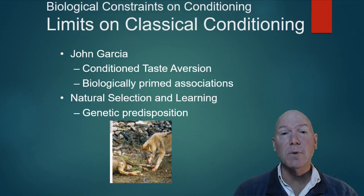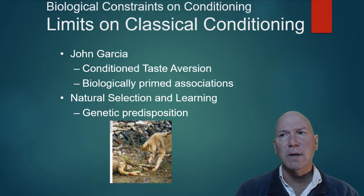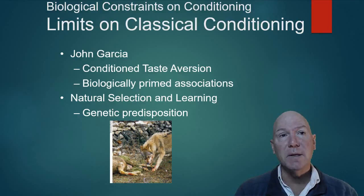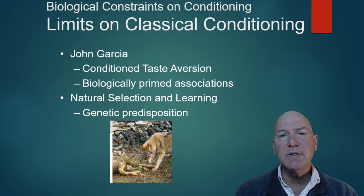A guy named John Garcia really questioned the idea that any stimulus can substitute for an unconditioned stimulus. He was doing experiments with rats, giving them small doses of radiation which made them nauseated and sick. He noticed after a time that these animals began to dislike the plastic water bottles. He wondered whether it was the taste or the water bottle causing this. What he showed is that conditioning usually leads to more natural kinds of stimuli — it was actually the taste that the rats became averse to.